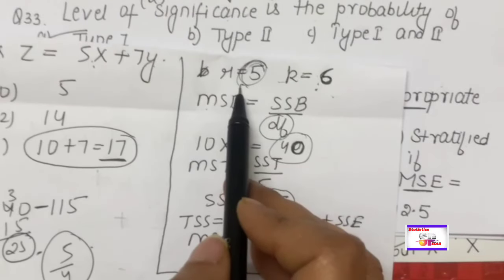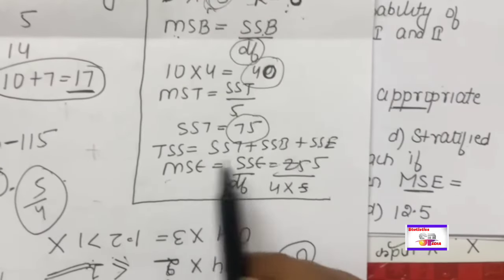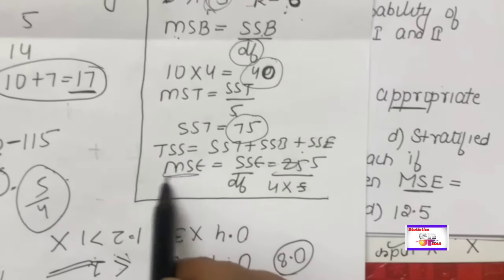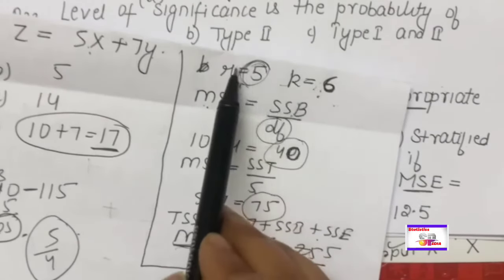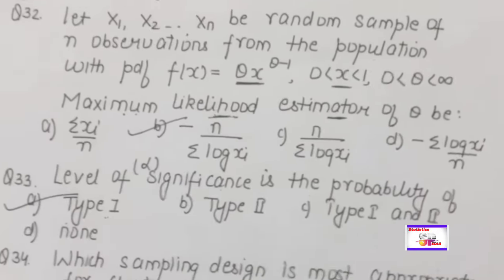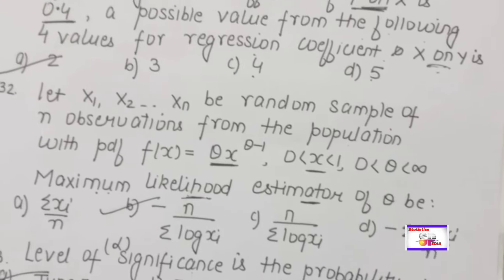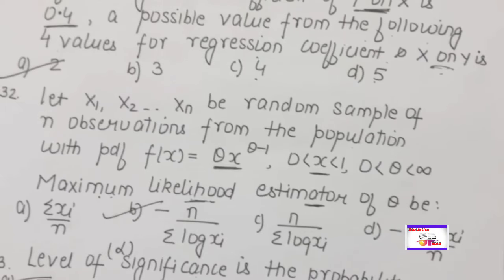MSE = SSE / [(r−1)(k−1)] = 25/20 = 5/4 = 1.25. Remember: MSE = sum of squares divided by its degree of freedom; in RBD, error degrees of freedom = (r−1)(k−1). TSS = SST + SSB + SSE. The answer is 1.25. Thank you for watching this video — best of luck with your revisions!